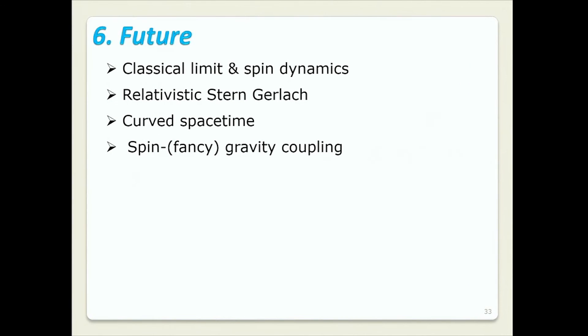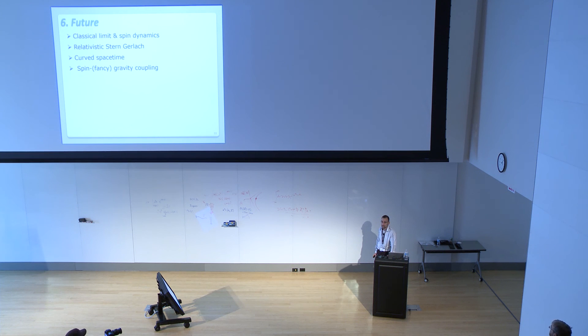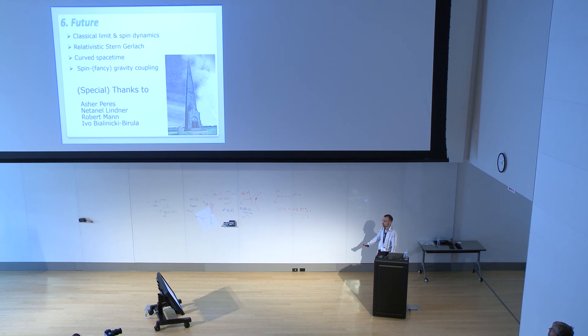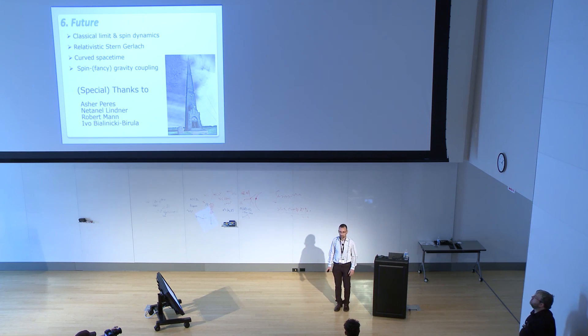And, well, in the future, we would like to understand classical limits and spin dynamics. Relativistic Stern-Gerlach operators experiment, and not in the easy way, in the proper way, which is actually quite unsharp even in non-relativistic quantum mechanics. If you really look what you measure, then generalize to fancy curved spacetimes, normal and fancy gravity couplings. Thank you for your attention. And thank you for all those people who helped me to understand aspects of this story.